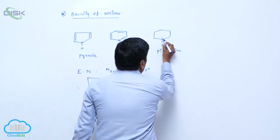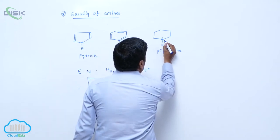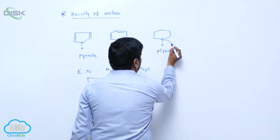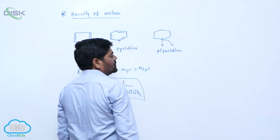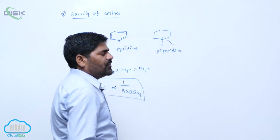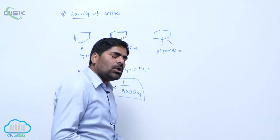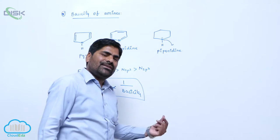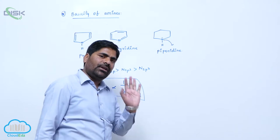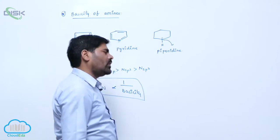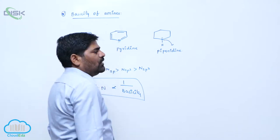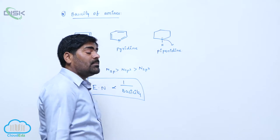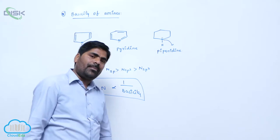Now, the nitrogen lone pair — the first factor is the delocalization factor, and the second one is electronegativity of the nitrogen atom. We should consider both to explain the basicity of amines.